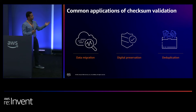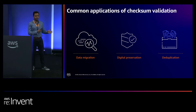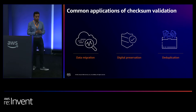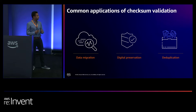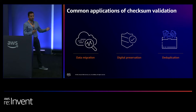Let's look at some common applications for checksum validation. The first is data migration — when moving large amounts of data from on-premises or other appliances to S3, you can compare previously existing checksum values against those that S3 calculates for you to verify the right bytes landed. The second is digital preservation, common for customers in media and entertainment as well as government agencies with digital archives needing to be stored for multiple years.